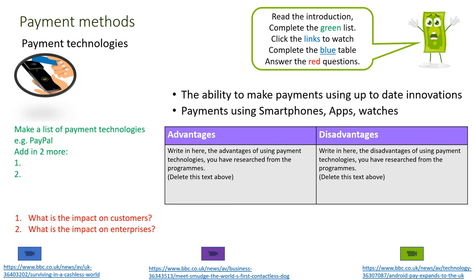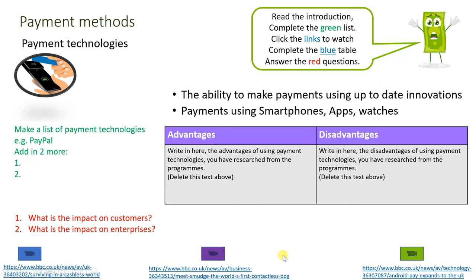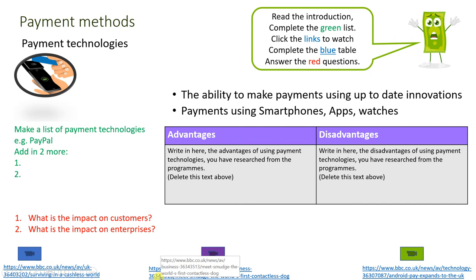The green list is where you list the payment technologies. Then complete the purple table showing advantages and disadvantages of each technology — bullet points are fine. The three video clips to watch are: 'Surviving in a Cashless World' (blue button), a video about Smudge the world's first contactless dog (purple button), and a clip about Android Pay expanding to the UK (green button). Follow this order so you build knowledge before attempting the red questions.